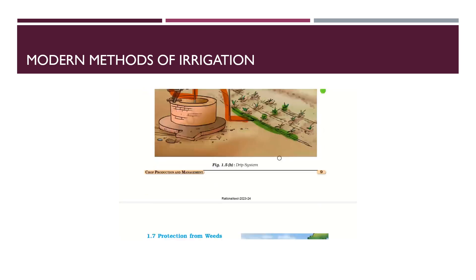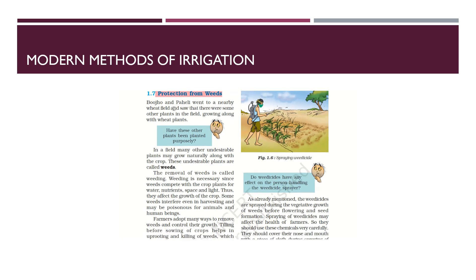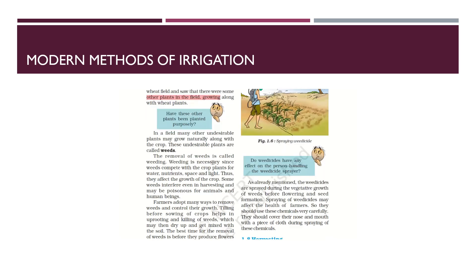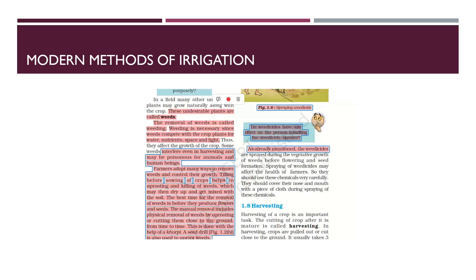Sprinklers and the drip system are the two modern irrigation methods. Now we move on to protection from weeds. When Bujo and Paheli went to their uncle's house in summer vacation and visited a nearby wheat field, they saw some other plants growing along with the crop. These are undesirable plants called weeds. Their removal is called weeding. Weeds compete with crop plants for water, nutrients, space, and light, affecting crop growth. Some weeds interfere with harvesting and may be poisonous for animals.